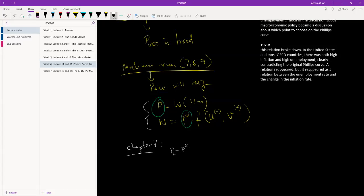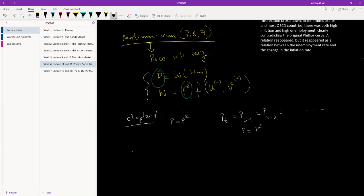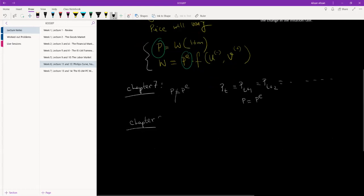Whatever the price is today will also be the price tomorrow and the day after that. In a situation where price is not changing, obviously price is always equal to expected price. That was the assumption we had made. Today in Chapter 8, we are going to let the price level vary. So the first thing we do is we get rid of this assumption. Price and expected price is no longer the same thing.